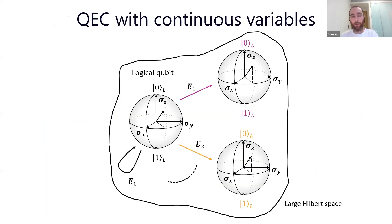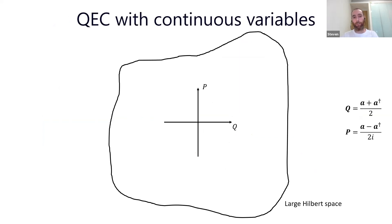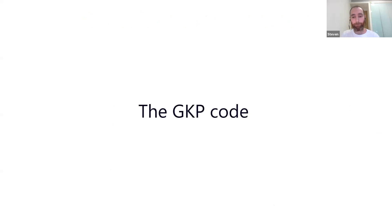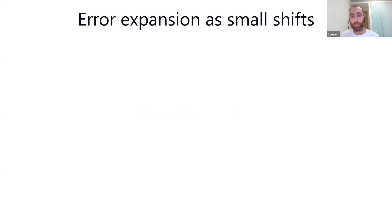Our goal is to do error correction with a harmonic oscillator using continuous variables. The large Hilbert space can be described in terms of a phase space where Q and P are two conjugate variables corresponding to operators defined using quantum optics conventions. These two operators give two different bases in which to describe our code. A crucial remark is that any error in a harmonic oscillator can be expanded as small shifts, which I'll illustrate with an example: if your harmonic oscillator is the mode of a cavity that can lose photons with rate kappa, the error operator can be expanded into four displacement operators parameterized by Q and P.